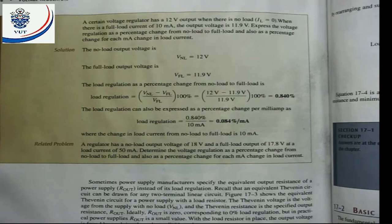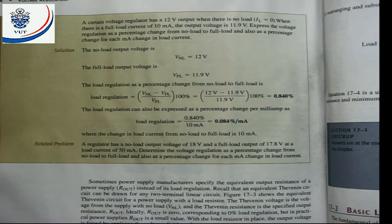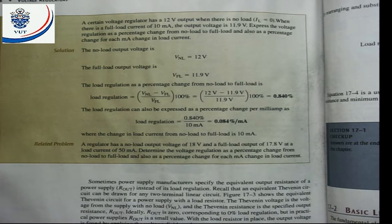Example 17.2: A certain voltage regulator has a 12-volt output when there is no load (I_L = 0). When there is a full load current of 10 milliamps, the output voltage is 11.9 volts. Express the voltage regulation as a percentage change from no load to full load, and also as a percentage change per milliamp. Using the formula: 12 minus 11.9 divided by 11.9 gives 0.84%. Expressed per milliamp: 0.84 divided by 10 equals 0.084% per milliamp.